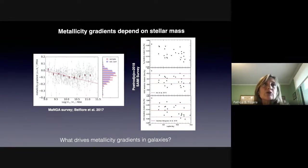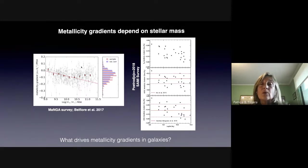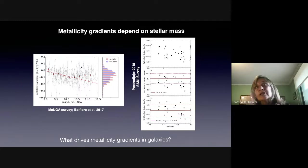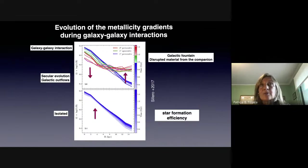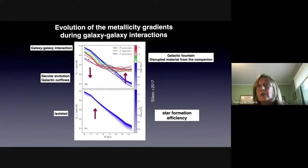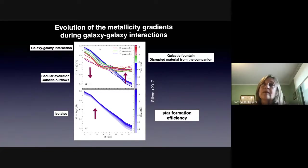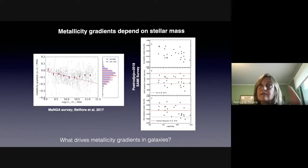Observations now show us that, besides negative metallicity gradients, there is a fraction of galaxies that show very weak or even positive metallicity gradients — where the inner regions are less enriched than the outer parts. This means the processes that produced this decrease in metallicity gradient were very extreme: blowing a lot of enriched gas from the central region and inverting the metallicity gradient, or there was a large amount of low-metallicity gas inflow directly accreted to the central region that inverted the gradient.